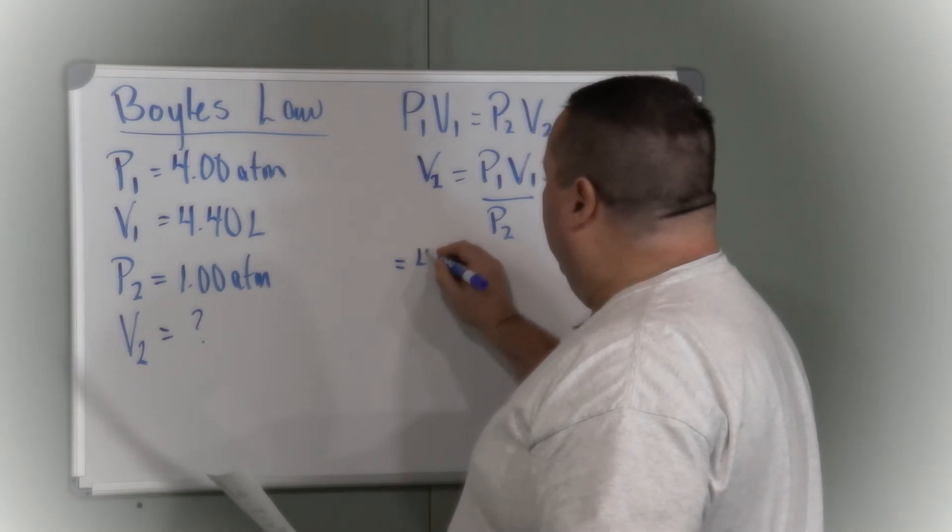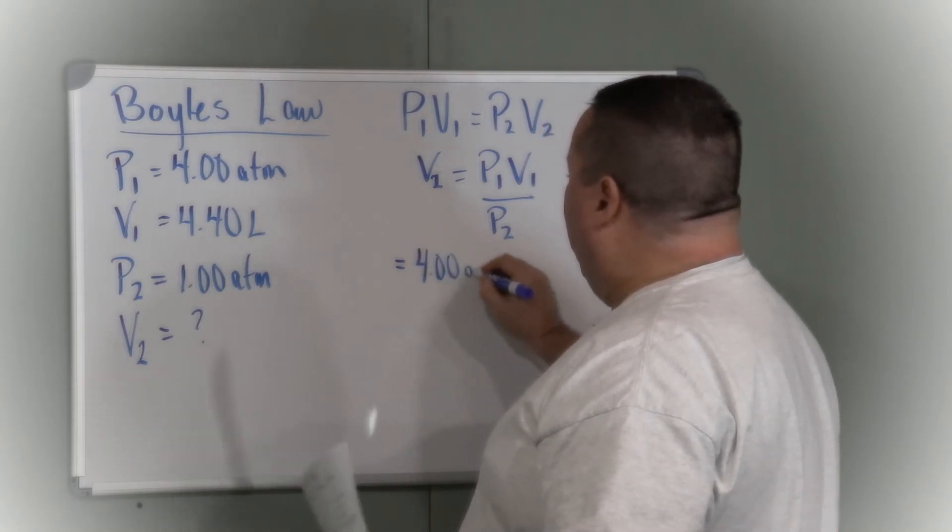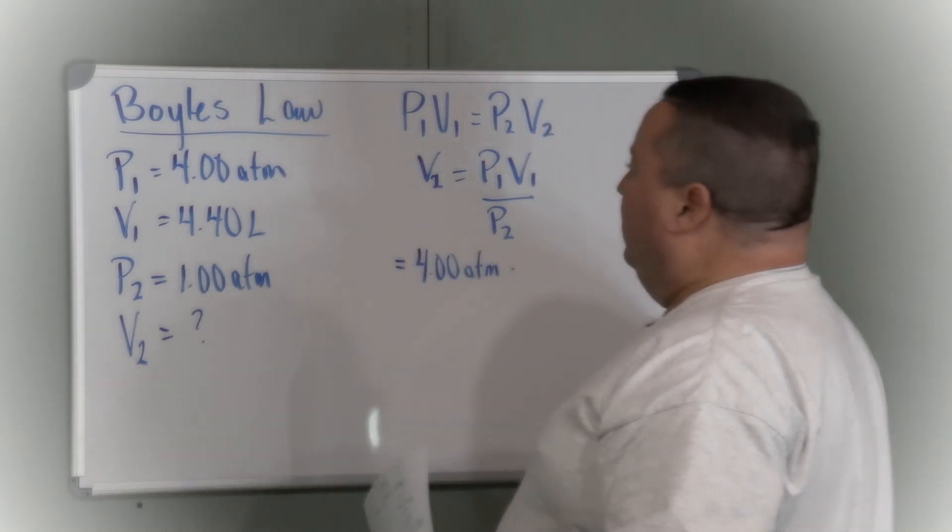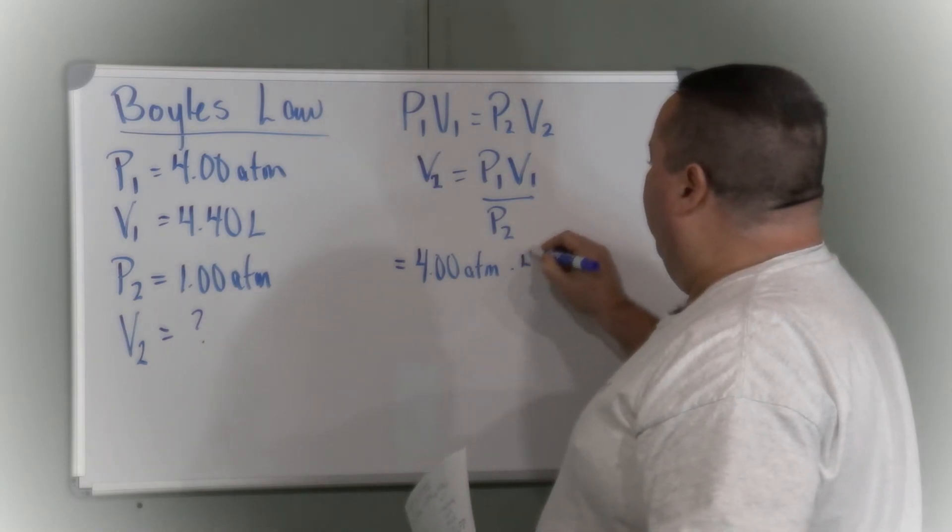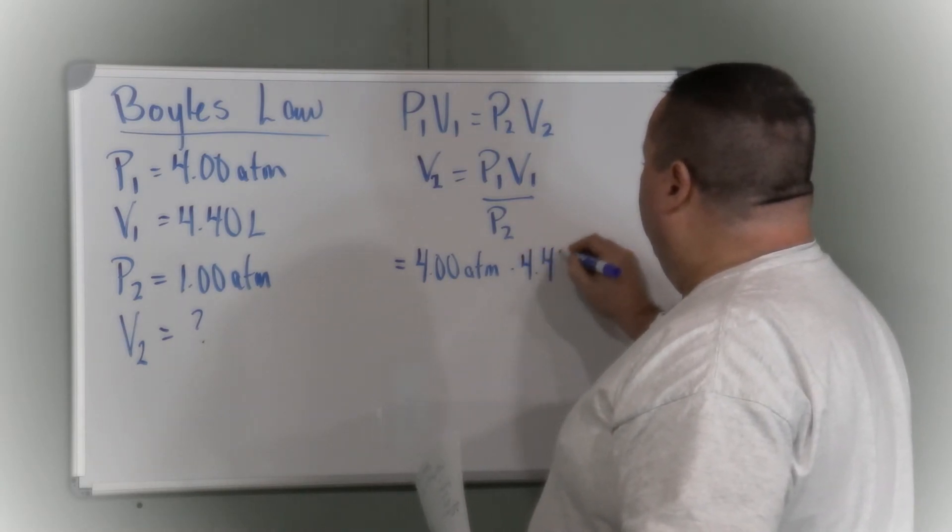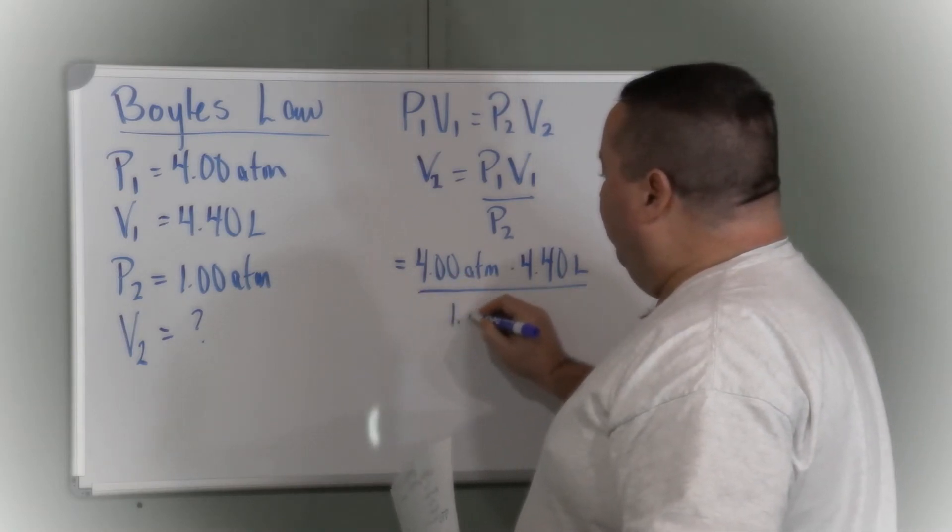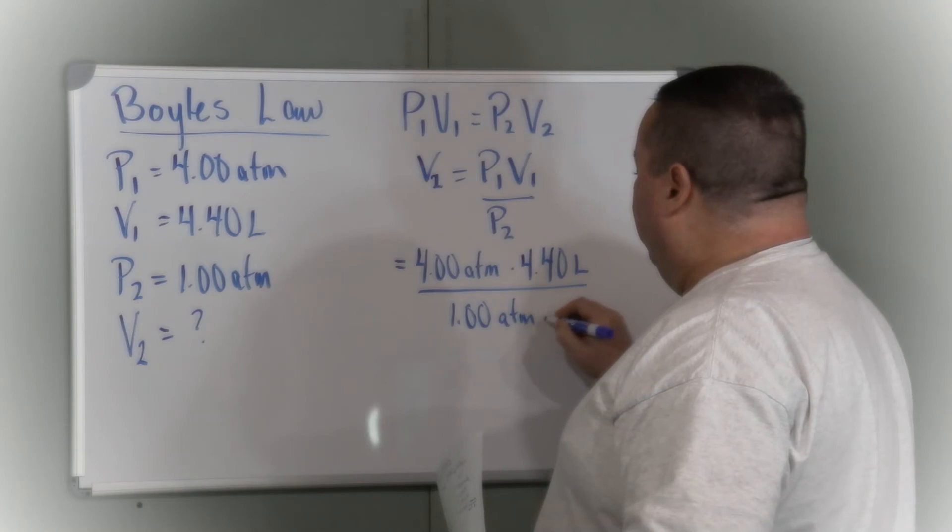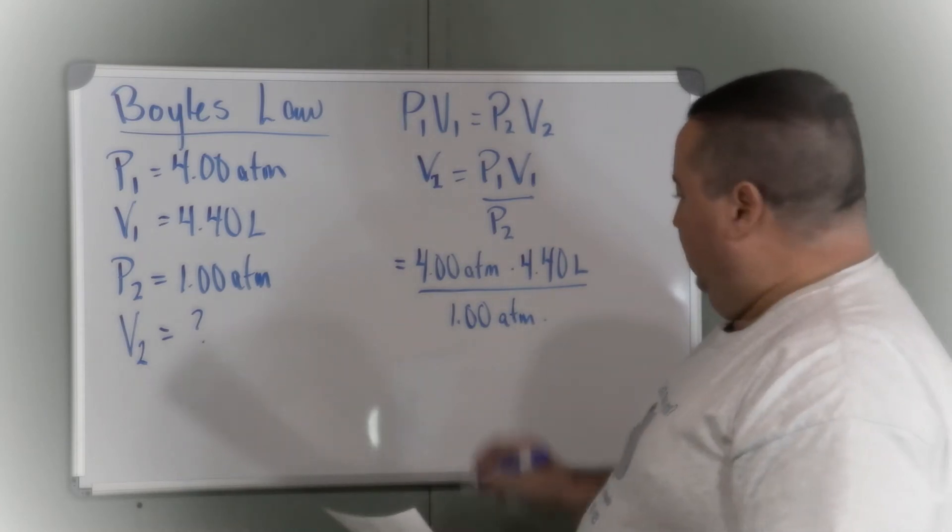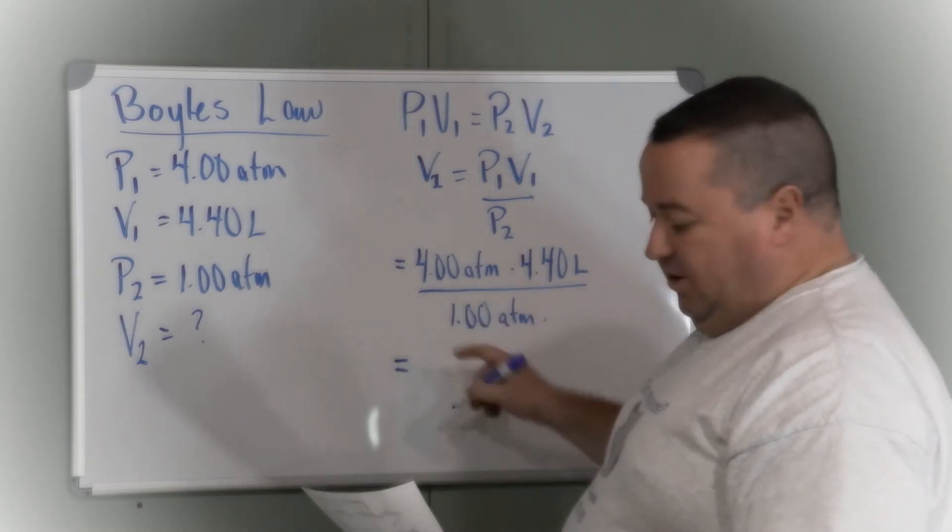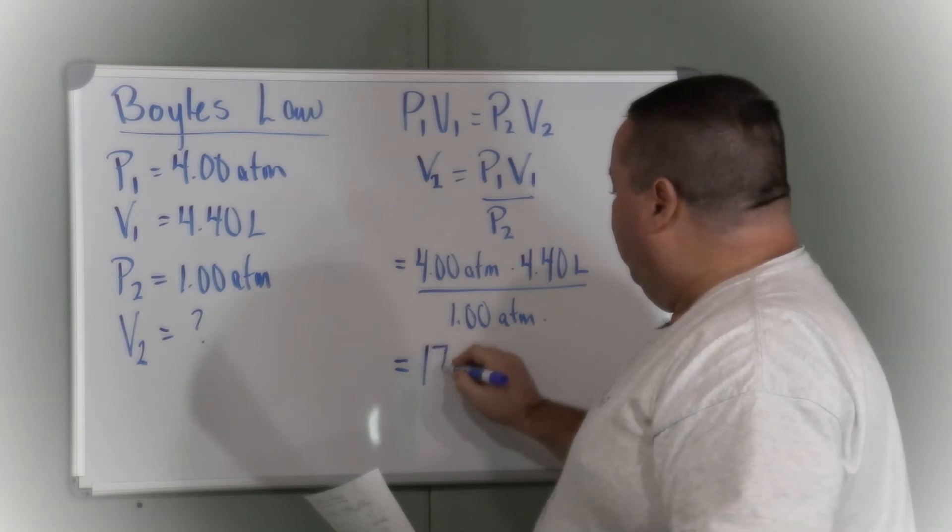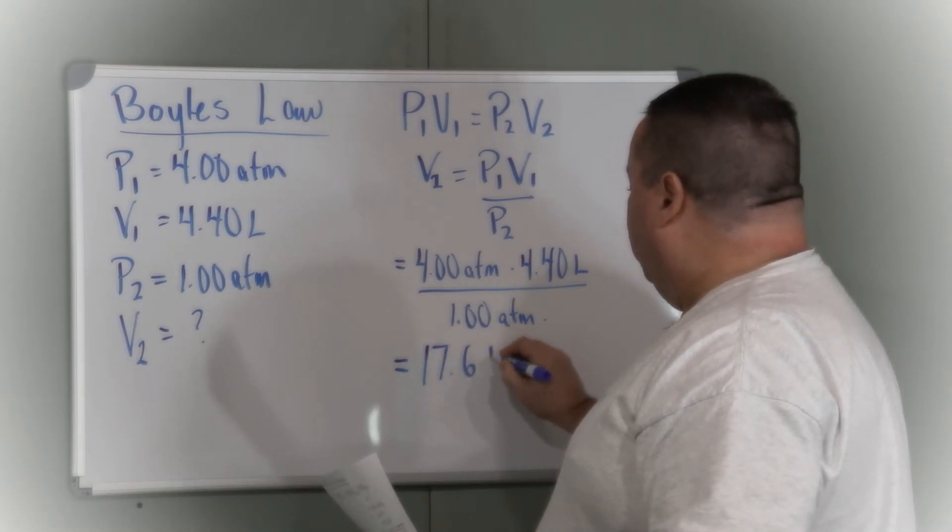So 4.00 atmospheres times 4.40 liters divided by 1.00 atmospheres. So to three significant figures, 17.6 liters.